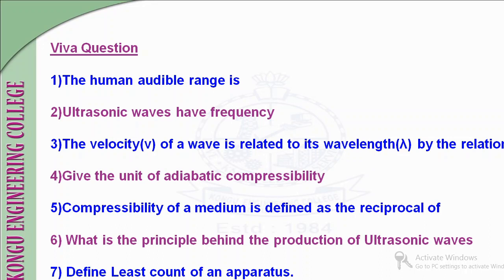Now we have some viva questions. The human audible range is 20 Hz to 20,000 Hz—the range of frequencies to which the human ear can respond. Ultrasonic waves have frequencies greater than 20,000 Hz.